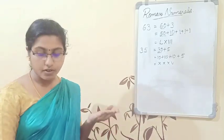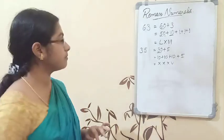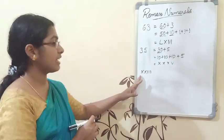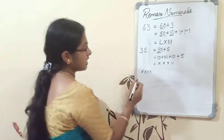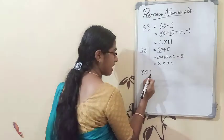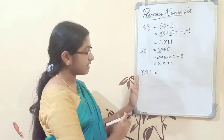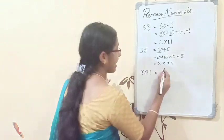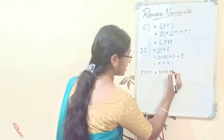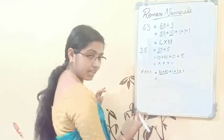Now convert the following Roman numeral to a Hindu-Arabic number: XXXIII. X means ten, X means ten again, then I means one, I means one, I means one. Since the left side values are greater than the right side, we only add. So ten plus ten plus one plus one plus one: twenty plus three equals twenty-three.